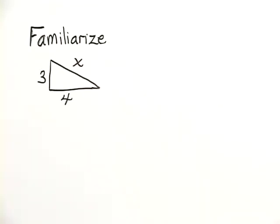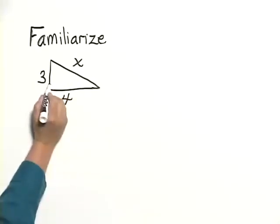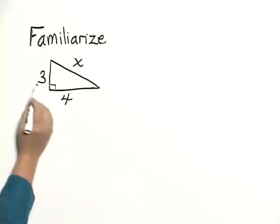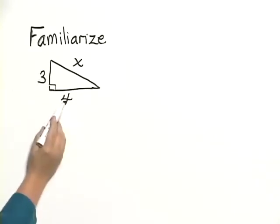We'll begin by familiarizing ourselves with the situation. In this case, we have been given a sketch of a right triangle and we know one leg is 3, one leg is 4, and we are trying to find the distance x.